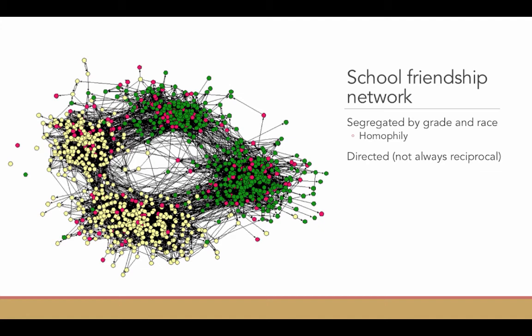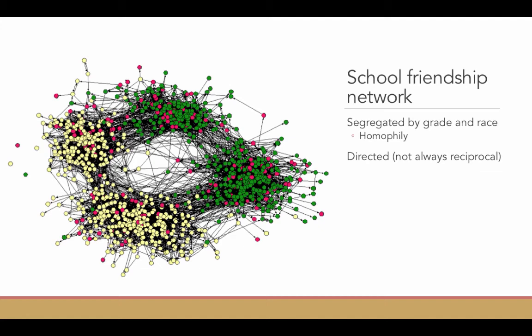You'll see if you look closely that the relationships, the ties between the nodes are directed. They have arrows. You can see in this blue circle, two white students have named each other as friends. But, the one student in this blue circle who is of another race or ethnicity, that person was nominated as a friend by the white student in the middle, but did not reciprocate that nomination. In fact, the student of another race or ethnicity said they did not have any friends at that school.